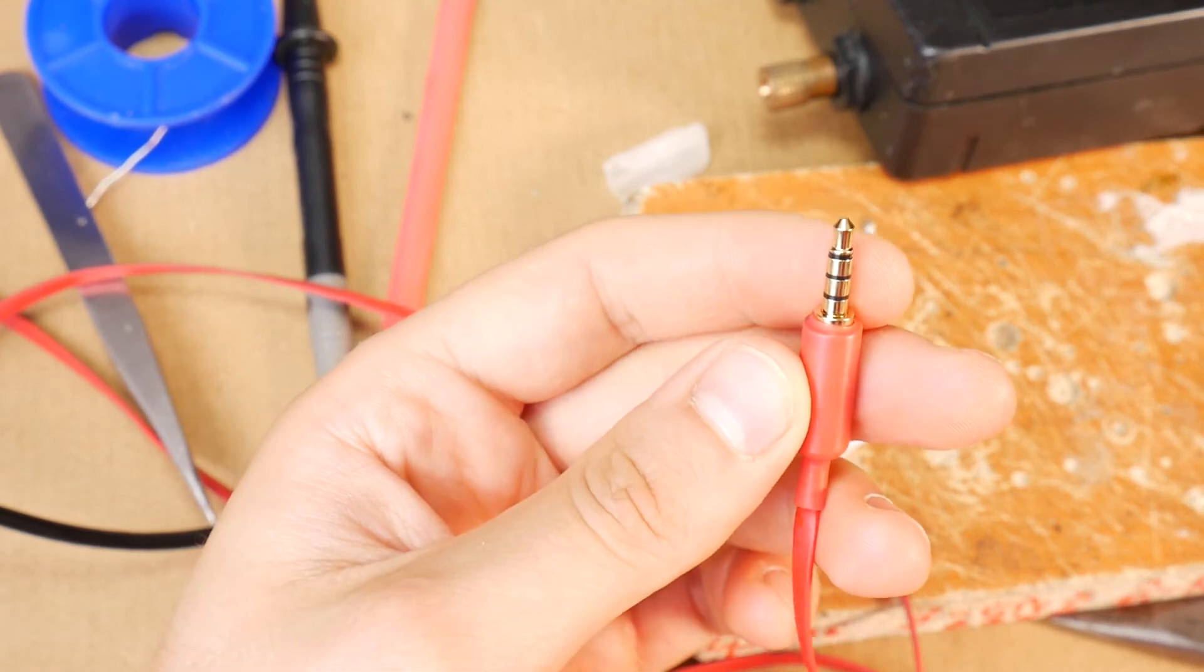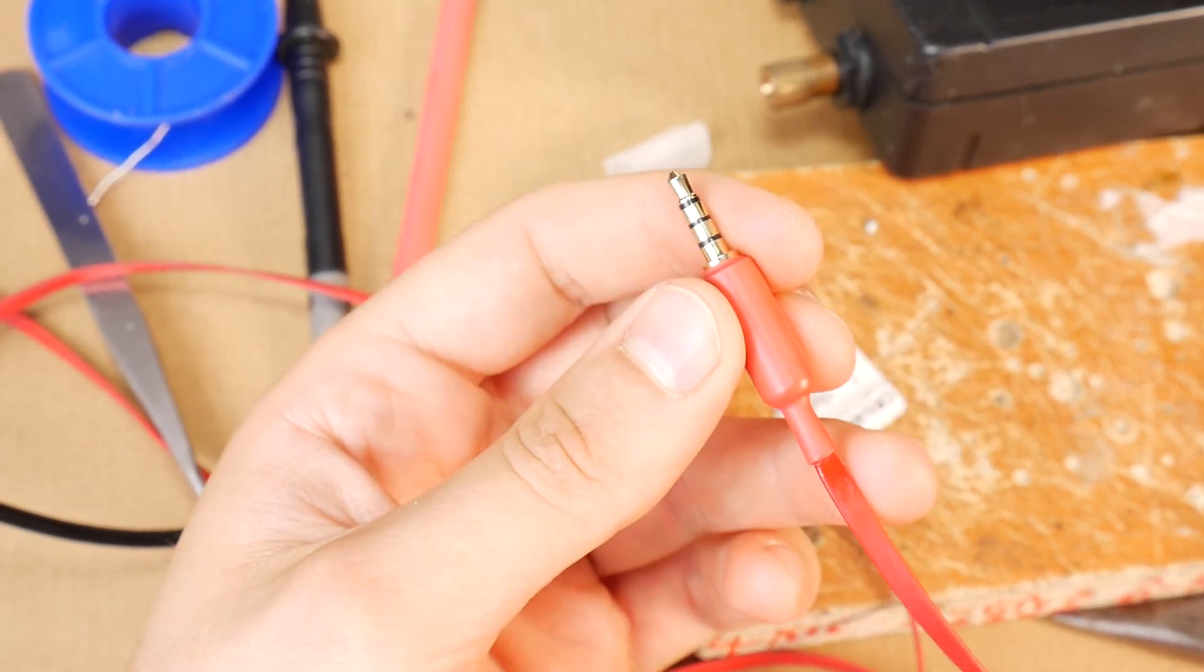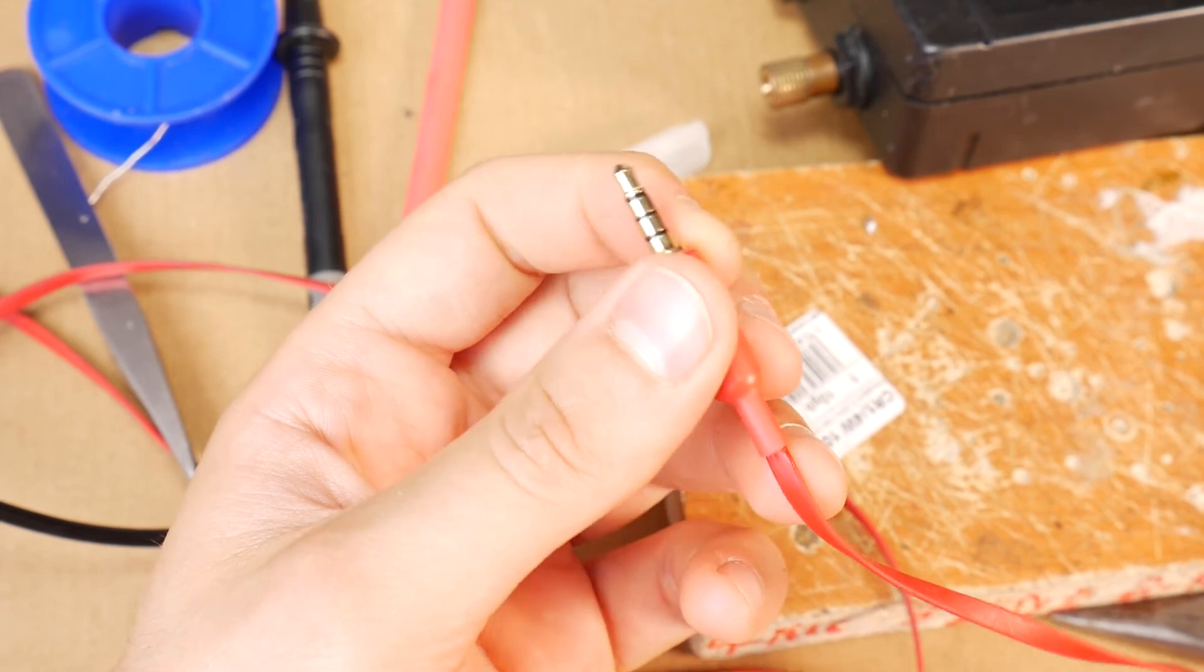Here's the result: repaired Beats EP headphones. They look and work like new. The link to buy the jack will be in the video description.